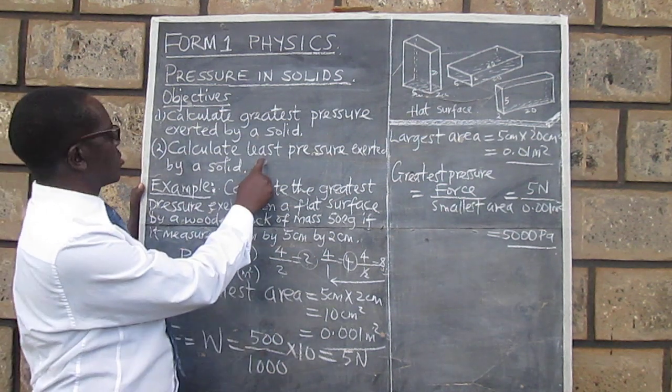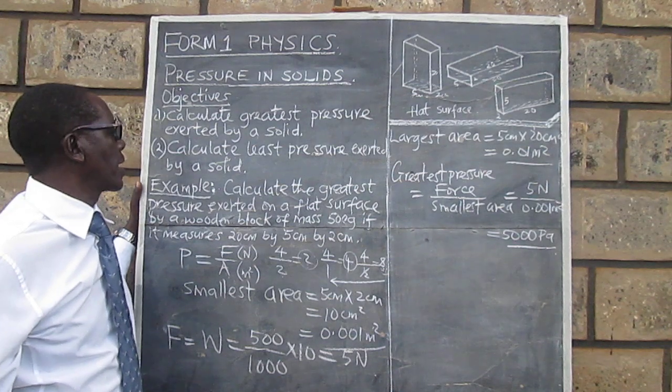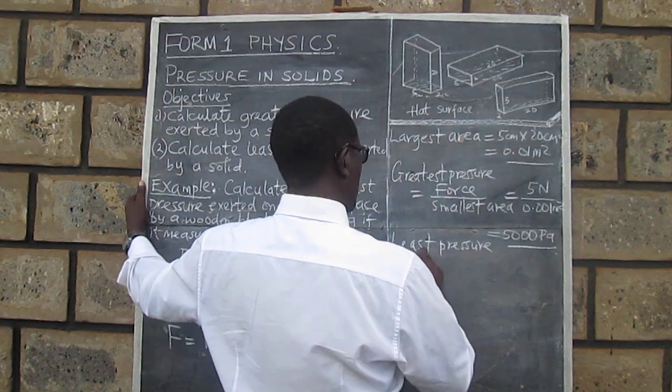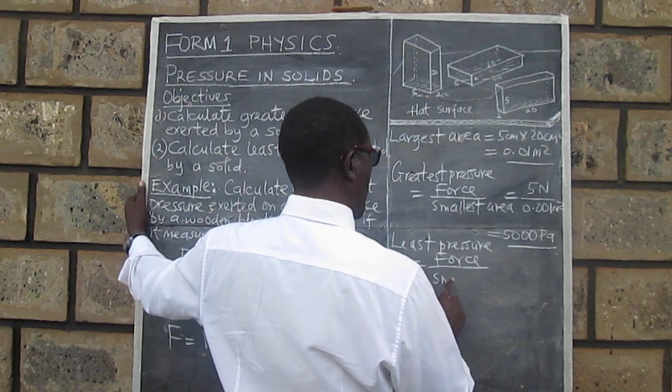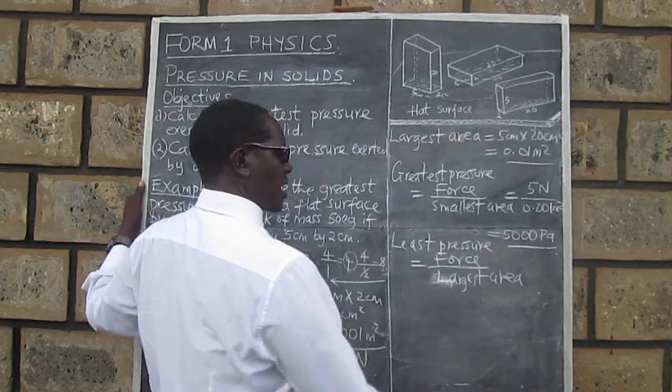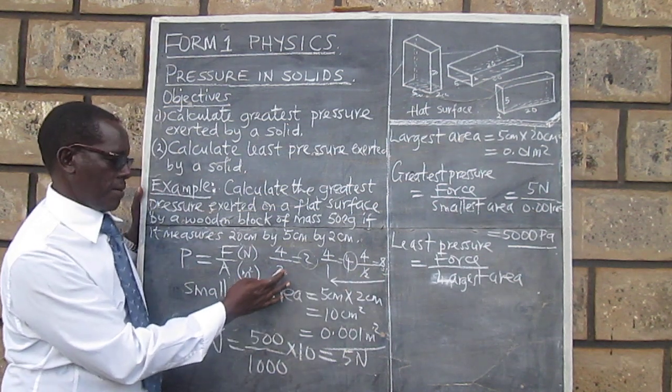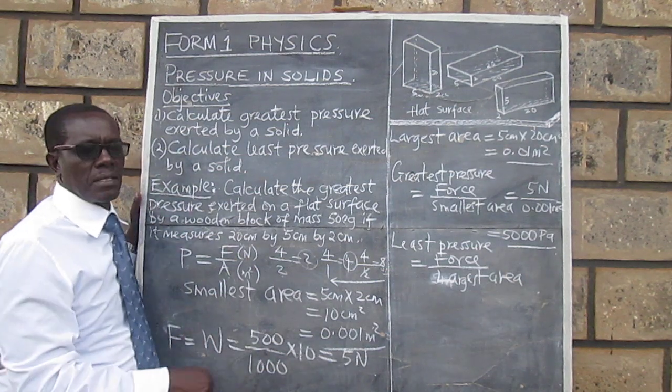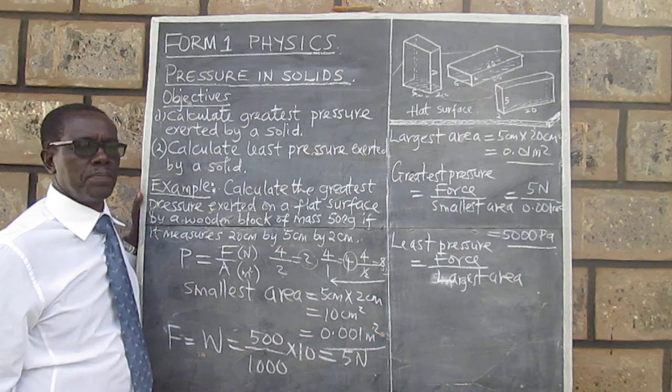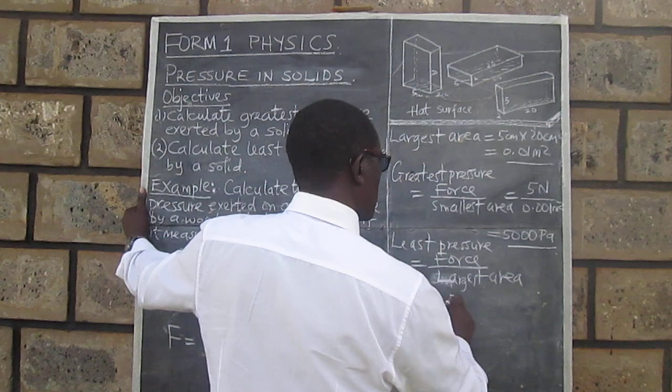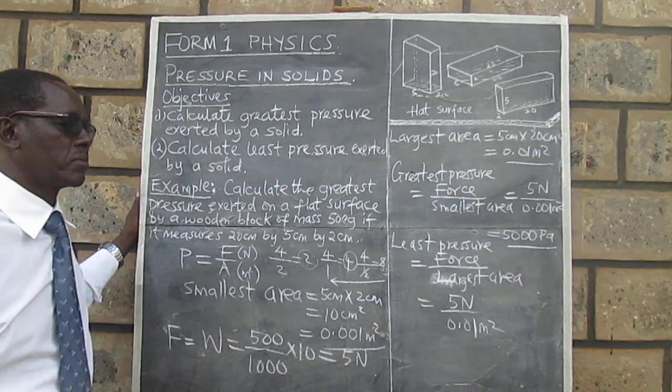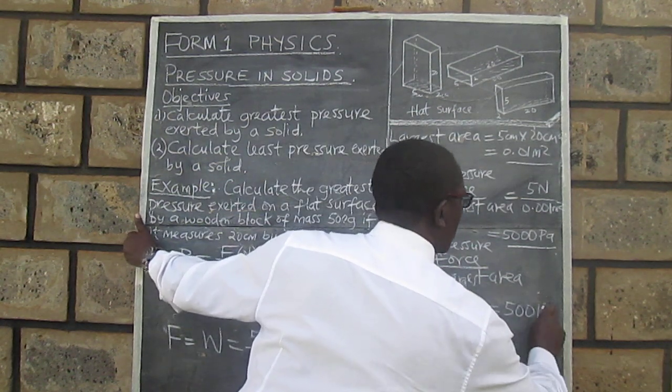So we now need to go to our second objective: to calculate the least pressure exerted by a solid. Least pressure will be given by force divided by largest area. Just like we've said, when we make the denominator bigger, the value of the fraction reduces. So in this case, the larger the area, the smaller the pressure for the same force. So that's what we are working out now, and this gives us 5 Newtons divided by 0.01 square meters, and this gives us 500 Pascals.